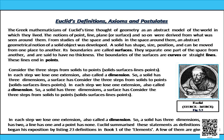A solid has shape, size, position and can be moved from one place to another. Its boundaries are called surfaces. They separate one part of the space from another and are said to have no thickness. The boundaries of the surfaces are curves or straight lines.